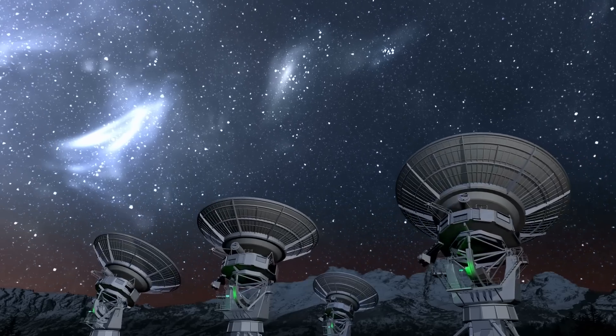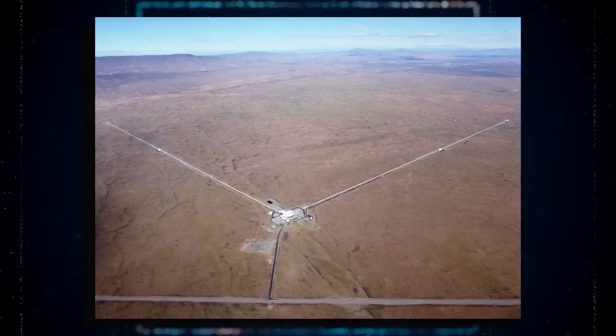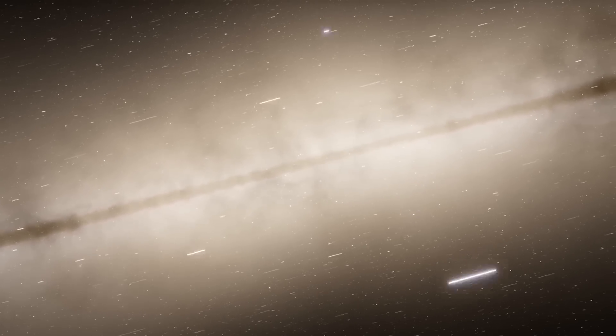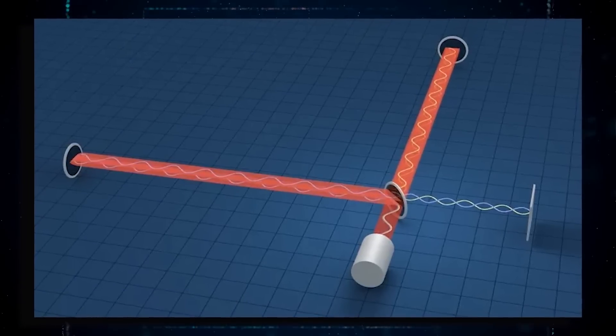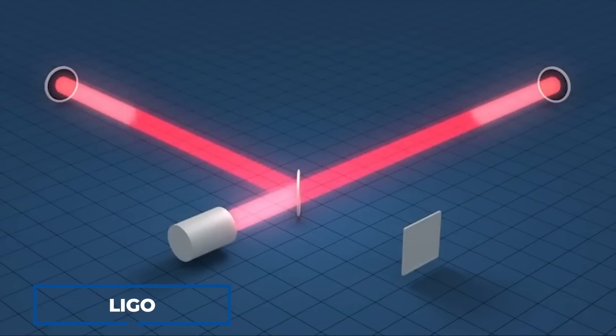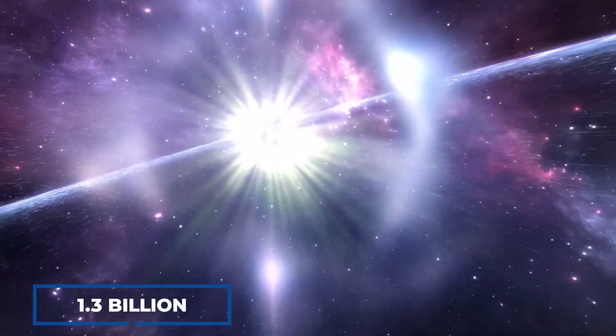Due to the intense gravitational pull, black holes cannot be seen directly. Instead, researchers use massive radio telescopes and gravitational wave detectors to observe their effects on their surroundings. In 2015, researchers at the Laser Interferometer Gravitational Wave Observatory, LIGO, observed gravitational waves for the first time, caused by the collision of two black holes 1.3 billion years ago.